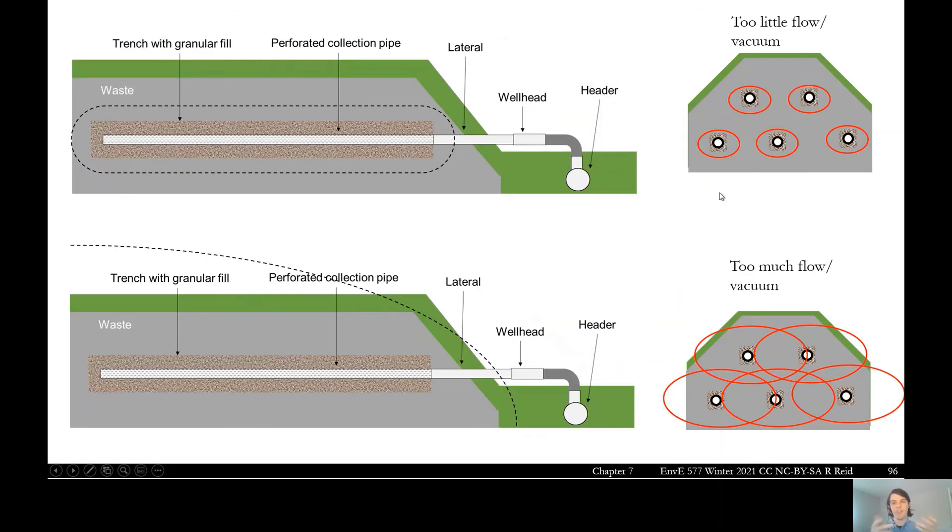We can also look at this from a different angle for our horizontal system. So where our flow is too little, again, we have all these areas that we're not getting coverage over. And then where our flow is too much, we're going to be pulling in from the surface and inefficiently fighting over the gas inside. And then our sweet spot, again, our circles would be just kissing each other.